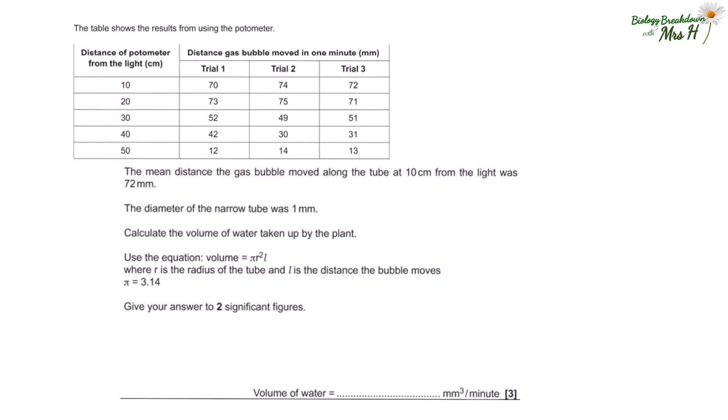So the table shows the results from using the potometer. We can see we've got distance of potometer from the light, the distance the gas bubble moved in one minute, and then there are three trials at each distance. The mean distance the gas bubble moved along the tube at 10 centimeters from the light was 72 millimeters. The diameter of the tube was one millimeter. Calculate the volume of water taken up by the plant. Use the equation volume equals πr² times l, where r is the radius of the tube and l is the distance the bubble moves, and π is 3.14. Give your answer to two significant figures.